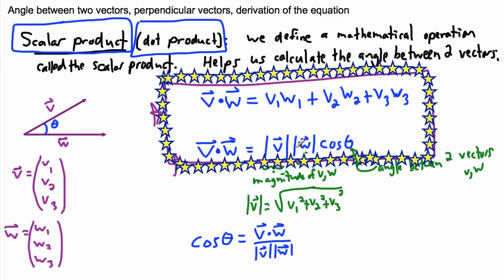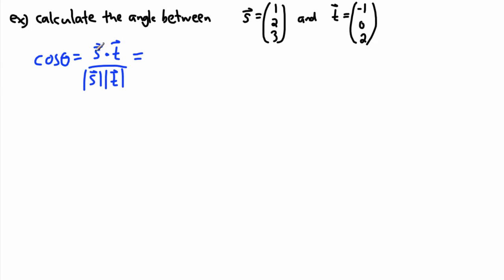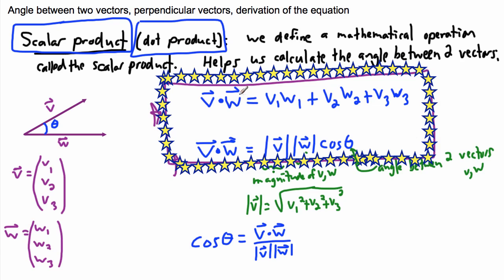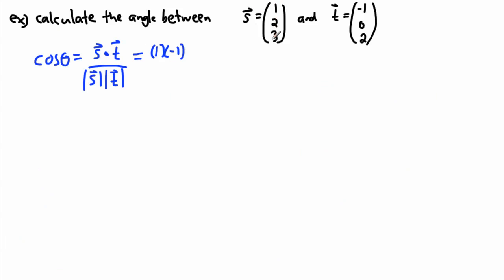Remember, if I want to figure out the dot product, it's v1·w1 and so on. So I'm going to use that now. I take each of the pieces: it's 1 times negative 1. I'm figuring out what s dot t is using the first equation, so s dot t equals s1·t1 plus s2·t2 and so on. So s1, s2, s3 and t1, t2, t3 — I do the first times the first, plus the second times the second: 2 times 0, plus 3 times 2.